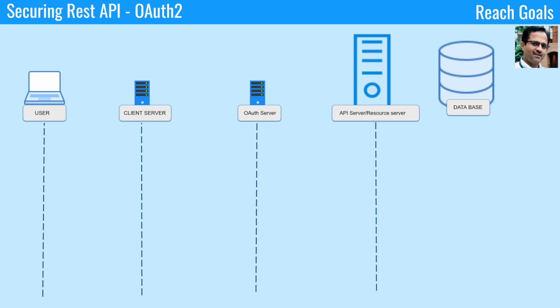Let me use another diagram shown on the screen to simplify this. Here we have the user, which is the user browser. Then there is a client server, which is a layer between the user and the OAuth server. We have the OAuth server used to generate tokens and do validation. Finally, we have the API server, or resource server, which hosts your RESTful APIs. Let's see each step involved in securing the REST API using the OAuth token.